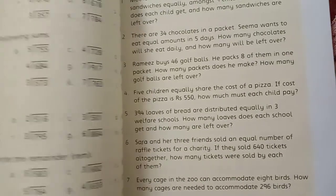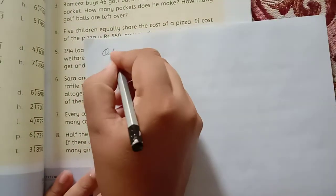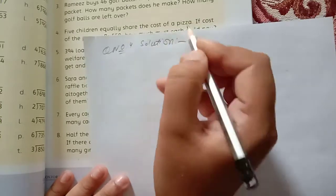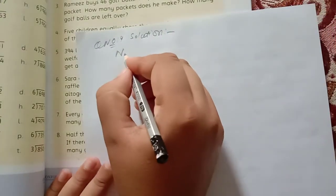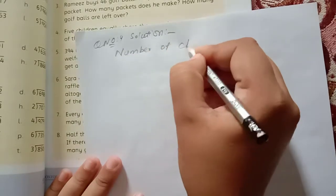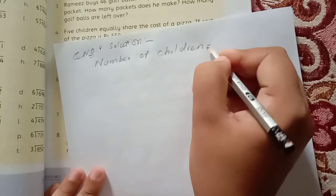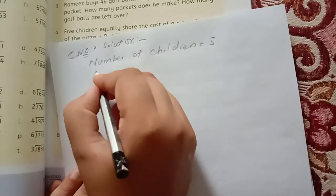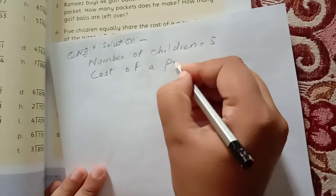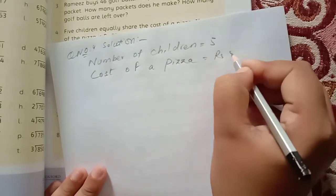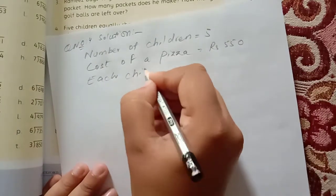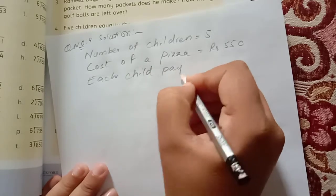We will start with number 4. We will write the solution. We will write the statement first: number of children or total children, you can write both. Cost of a pizza, the cost of a pizza. Each child pay.